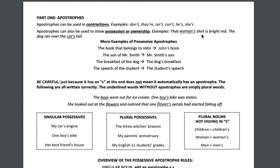For example, if I say that woman's shirt is bright red, the shirt belongs to the woman. If I say the dog ran over the cat's tail, the tail belongs to the cat. So these are just more examples here.